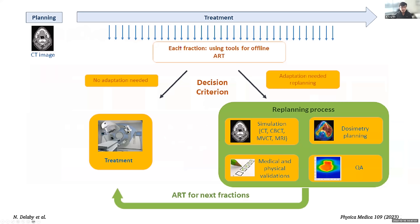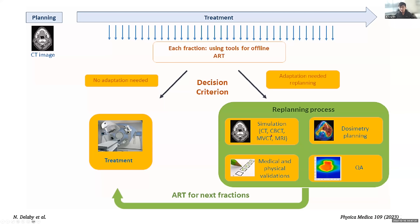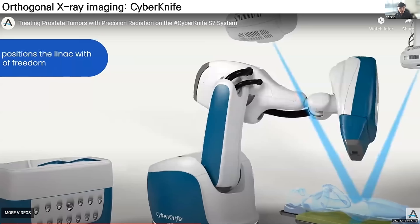This graph from Physica Medica journal shows that at each fraction we can use CBCT, MVCT, or MRI to repeat planning for each simulation CT, and ultimately deliver the best dose per fraction. For IGRT imaging options: historically we had only 2D X-ray imaging. CyberKnife uses two oblique X-ray systems, and our carbon gantry currently only has 2D X-ray — no cone beam CT. Fluoroscopic imaging can help optimize dose delivery but does not allow re-planning.